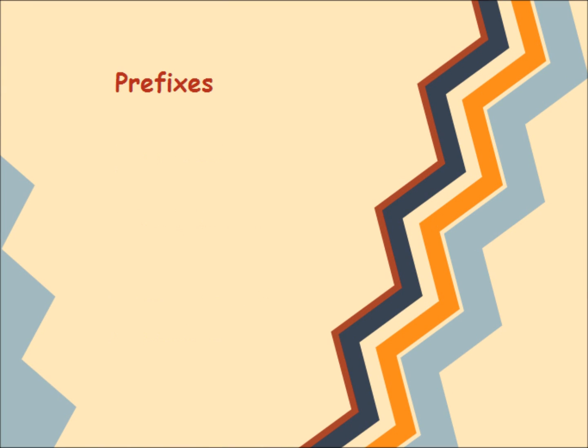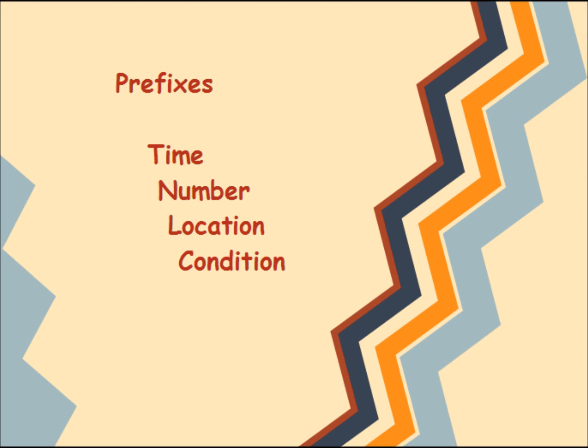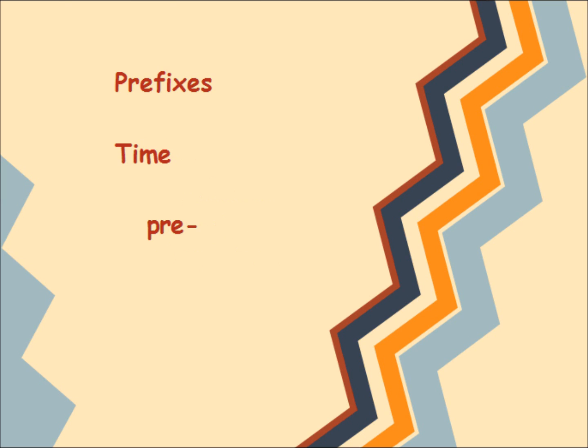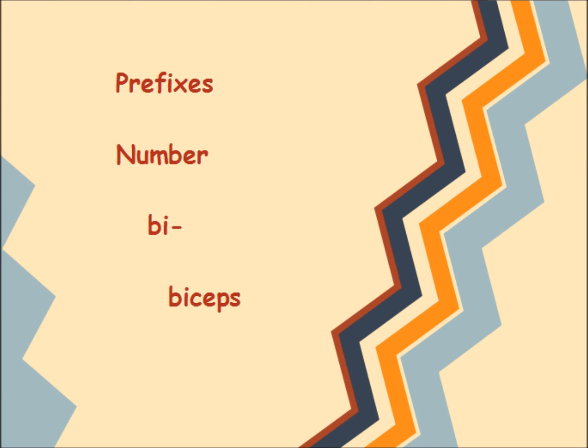Prefixes tell us time, number, location, and condition. An example of time is 'pre,' as in prenatal, meaning before the time of birth. An example of number is biceps — bi means two, and the biceps muscle is divided into two heads or parts.